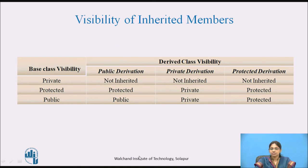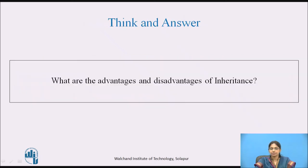This table shows how base class members are inherited in the derived class under different modes of derivation. Try to think and answer: what are the advantages and disadvantages of inheritance? Pause the video for some time and note down the answer in your book.